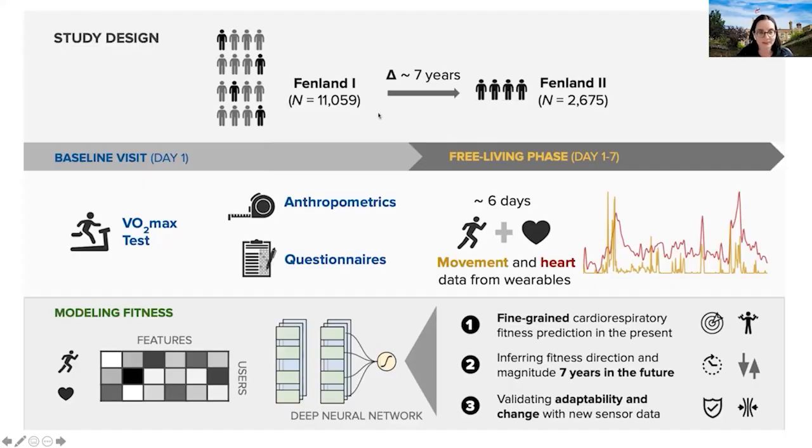The study design is that there is a group of people that epidemiologists in Cambridge have been tracking for years. It's called Fenland, and it has 11,000 people. They have been tracked by giving them some VO2 max tests, getting some anthropometric measures such as weight, height, and BMI, and some questionnaires of activity, as well as for six days, wearing a chest strap sensor that had an accelerometer and a heart rate monitor to collect this continuous data. One important thing is that this cohort has been tracked, and seven years later, a smaller subset of those has also been tracked in the same way.